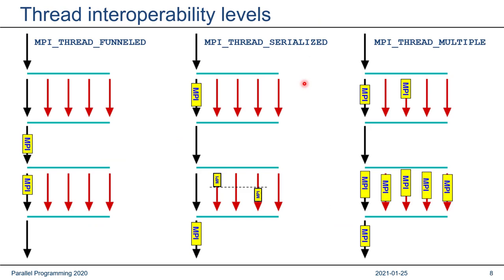Here's an overview of the thread interoperability levels, leaving out MPI_THREAD_SINGLE as a trivial case. MPI_THREAD_FUNNELED means only the master thread makes MPI calls, within or outside of parallel regions. MPI_THREAD_SERIALIZED means everyone can call MPI but only one at a time, requiring proper synchronization. MPI_THREAD_MULTIPLE is full freedom — you can do whatever you want with MPI, and MPI internally cares for thread safety.